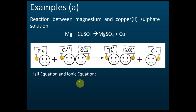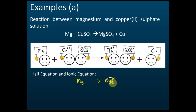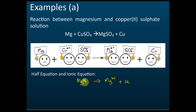Let's write the half equation for magnesium. Before the reaction, we have magnesium metal; after the reaction, it becomes magnesium ions. Is this equation balanced? No — the charge is not balanced. To balance it, we add electrons. In this case, we add two electrons to the right-hand side because electrons carry a negative charge. So negative two plus positive two gives a sum of zero, matching the left-hand side. This is the half equation for magnesium.